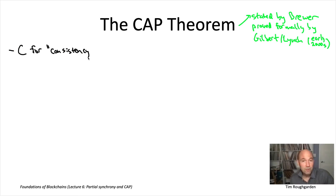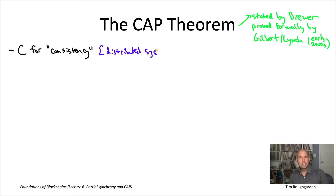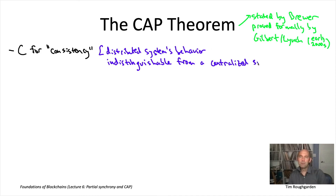So if C, A, and P don't stand for the last names of authors, what do they stand for? They stand for properties that you would really like a distributed system to have. To interpret these three properties, it might be helpful to have that same old-school consensus application in mind, where you have some big company like IBM trying to replicate a database. The C stands for consistency.